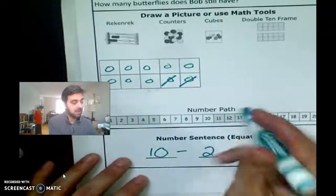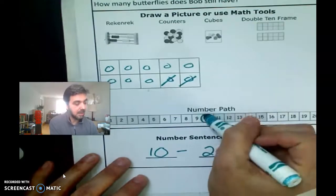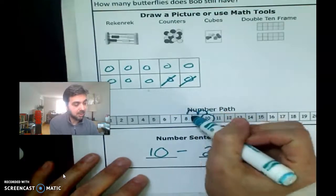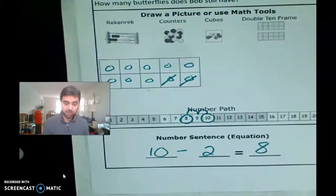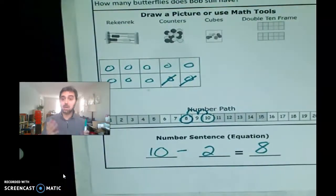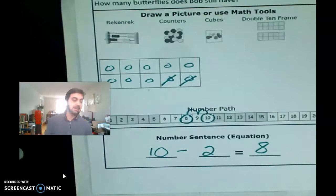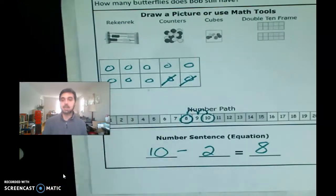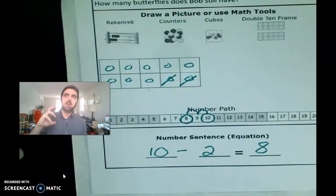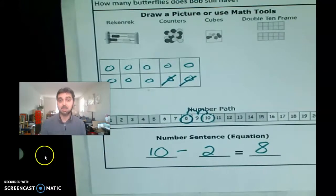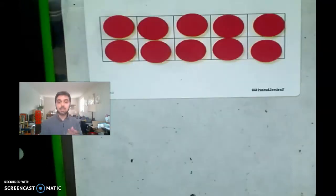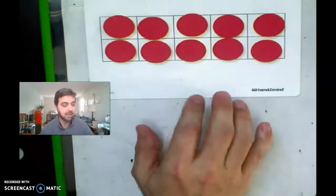All right, or the number path, you could have started at 10, gone back two, one, two, and ended at eight. So lots of ways that you could do this. Okay, we are going to do it in a very specific way today. So let me show you what that's going to look like. It's very similar to what we did yesterday, except that we're going to be subtracting instead of finding what was the missing tens partner. Okay, so here's what this looks like.